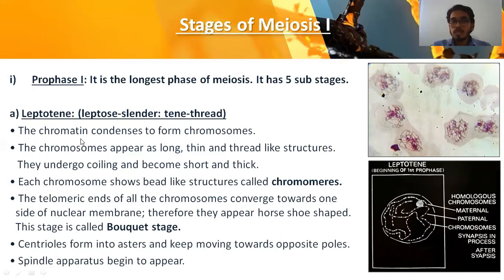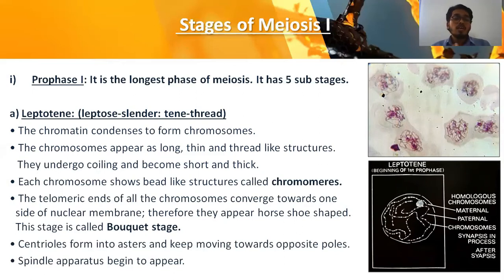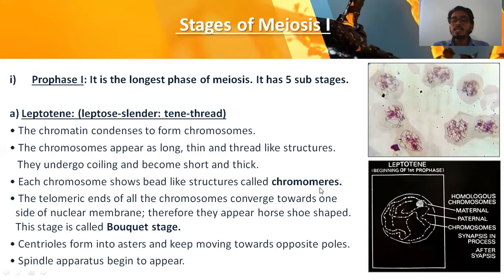In leptotene, the chromatin network condenses to form chromosomes, which appear as long, thin, thread-like structures. They undergo coiling and become shorter and thicker as the phase progresses. Each chromosome shows bead-like granular structures called chromomeres. The telomeric ends of all chromosomes converge towards one side of the nuclear membrane, making them appear as a horseshoe shape — hence this stage is also called the bouquet stage.